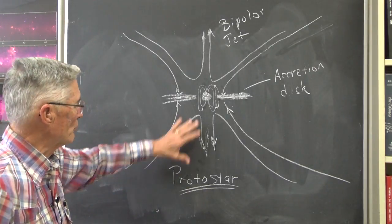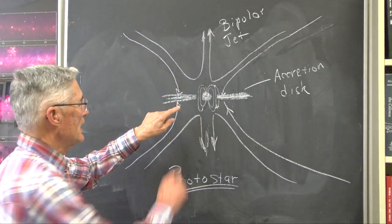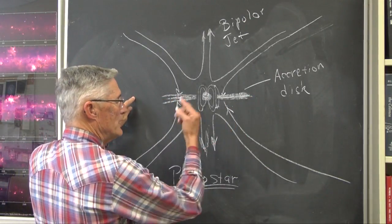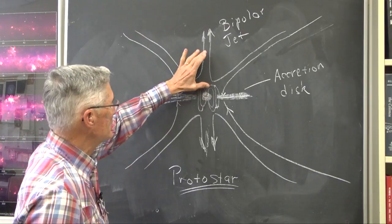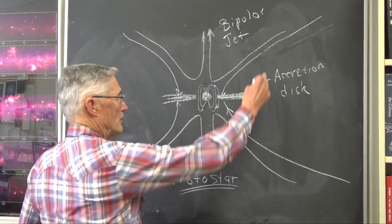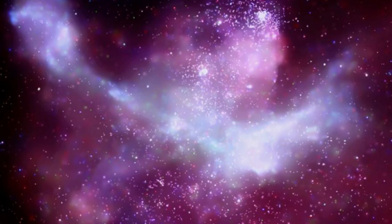And so this is what we think is a protostar. A protostar in the process of formation has an equatorial disk spinning very fast. It has this bipolar outflow and, of course, there's matter falling in from much further out in the cloud.